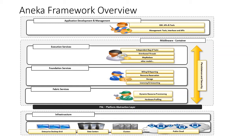The diagram showing the Anika framework overview illustrates the Anika middleware container, which includes three types of services: execution service, foundation service, and fabric service. Below that is the Platform Abstraction Layer (PAL), and below that is the heterogeneous infrastructure. We will look at all these services in detail in the coming slides.